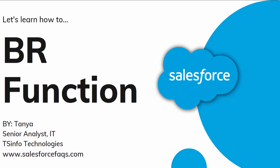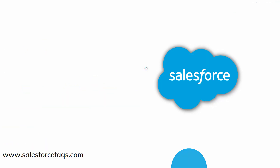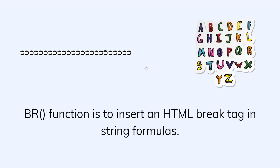Now let's move back to today's topic. Today we are going to learn about the BR function in Salesforce, and we will learn it in both Salesforce Lightning as well as the Classic user interface. The BR function is one of the text functions in Salesforce that is used to insert an HTML break tag in a string formula. One important thing to keep in mind: you can use the AND or plus operator as a concatenation operator to surround the BR. This function should not be used in mail merge templates, S-controls, or reports.